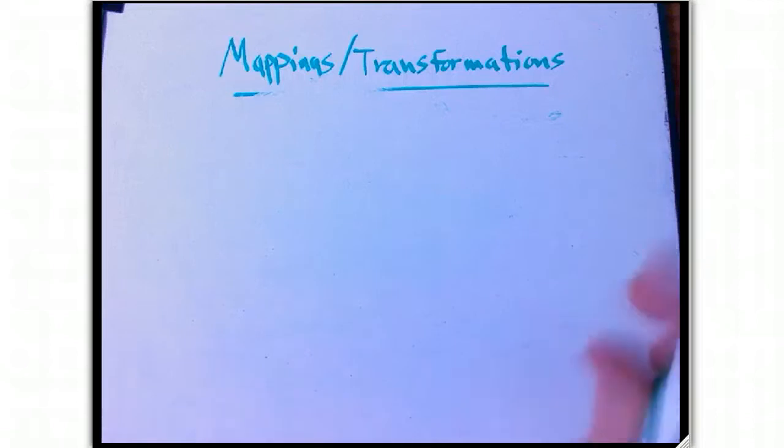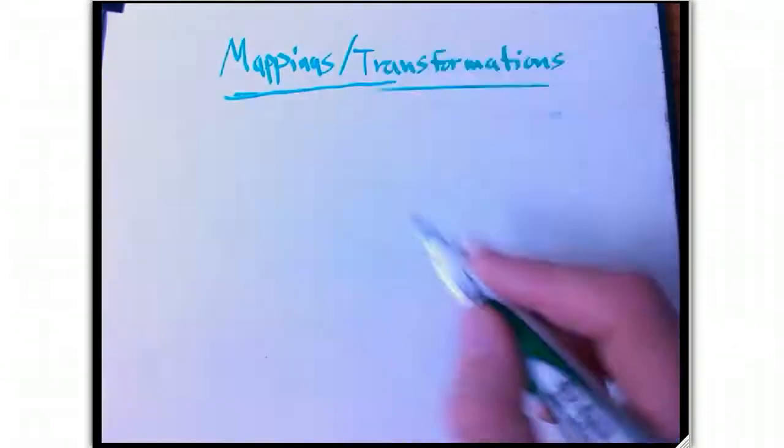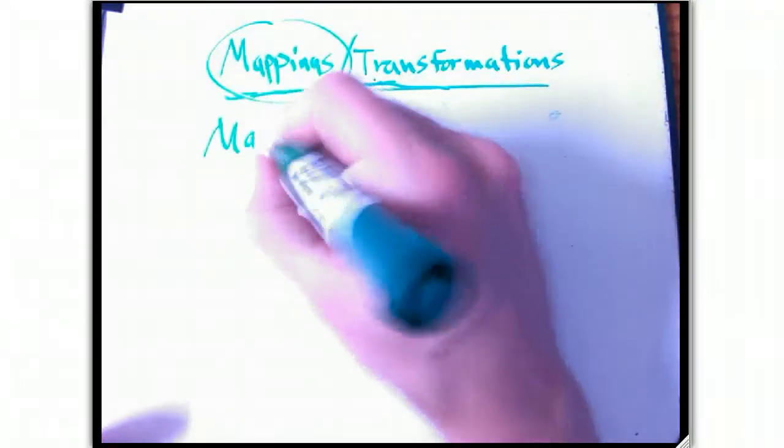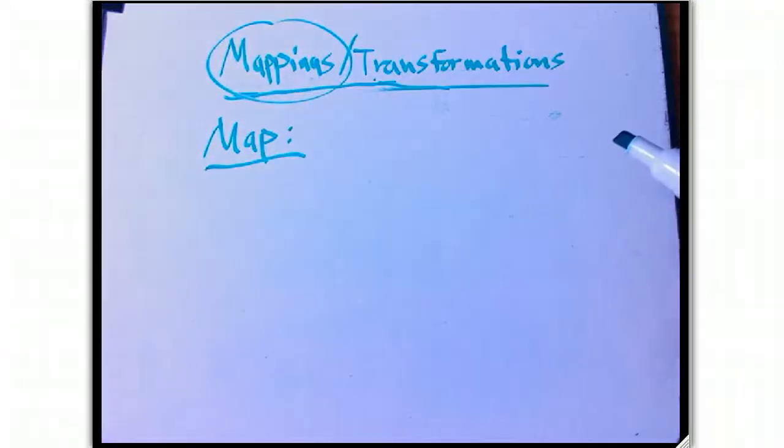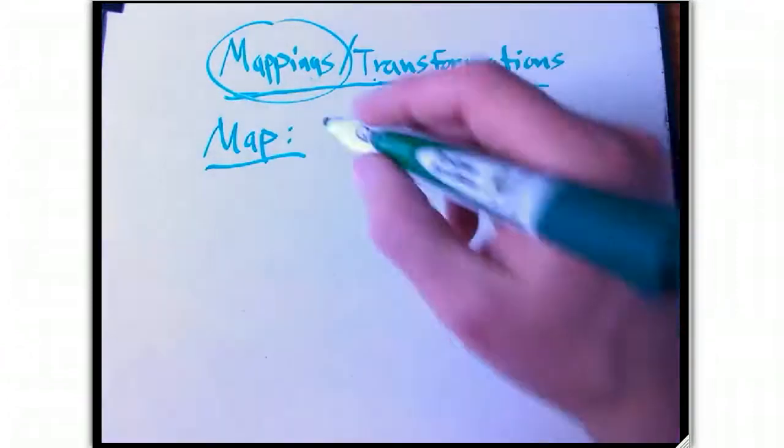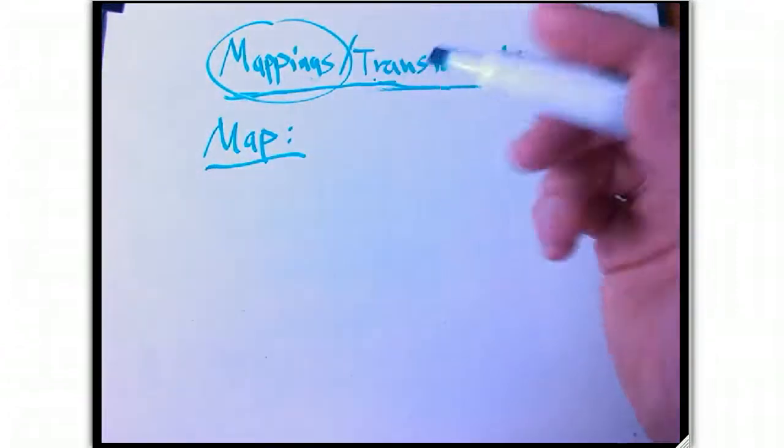What about physical models for that? Why would we be doing that like in an application? Well, this word mapping is a clue. For example, a map takes some surface, it is a correspondence between some surface and a piece of paper.